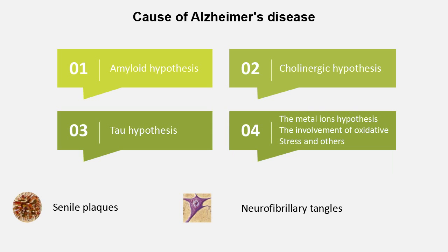The specific mechanism causing Alzheimer's disease is still not fully understood. Pathologically, Alzheimer's disease is characterized by three hallmark elements: numerous senile plaques composed of amyloid beta peptides, abundant neurofibrillary tangles formed by filaments of highly phosphorylated tau proteins, and apparent loss of neurons in the brain.